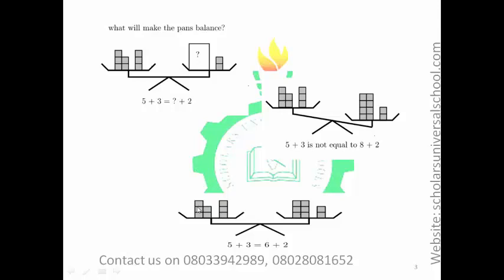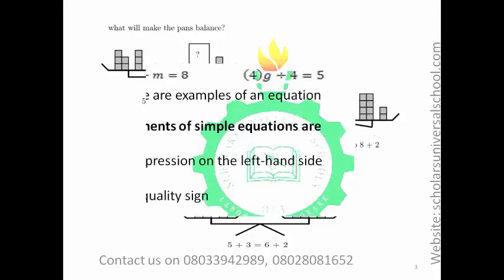So, we have 5 plus 3 equals 8, and we have 6 plus 2 also equal to 8. What is at the left-hand side is equal to what is at the right-hand side — that is the reason why this pan is balanced. This is an example of a simple equation. What is at the right-hand side must be equal to what is at the left-hand side. Carry this in mind to answer the remaining questions.